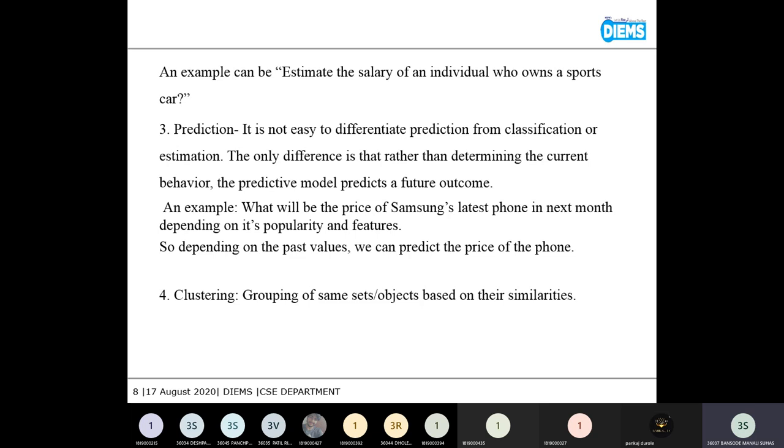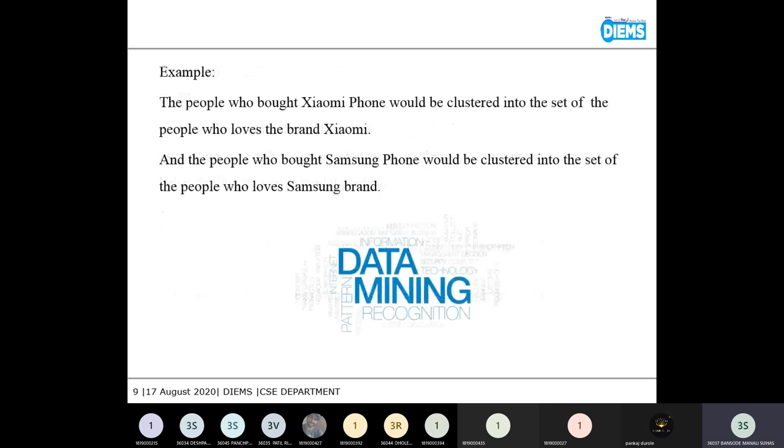The final part is clustering. So what does clustering mean? Grouping of same sets or objects based on the similarities is known as clustering. The example of it would be the people who buy Xiaomi phone would be clustered into the set of the people who love brand Xiaomi and the people who bought Samsung phone would be clustered into the set of people who love Samsung brand.